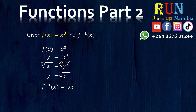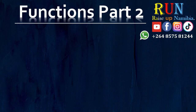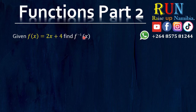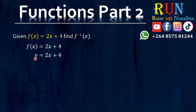So basically the cube root of x is your inverse. The inverse of f of x is equal to the cube root of x — and just like that, you are done. Easy, isn't it? Let's take a look at another example. Say for example you are given a function f of x is equal to 2x plus 4, and then you are asked to find the inverse. We rewrite the function and replace f of x with y.